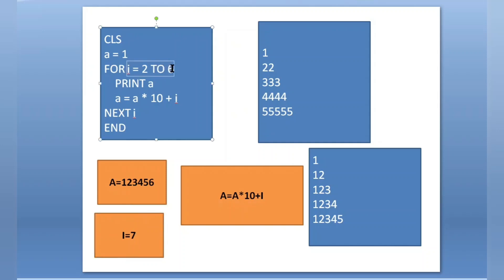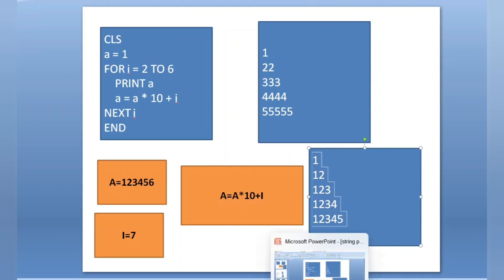Next i — the value of i is incremented by 1 to 7. It goes to the loop and checks: is i = 7 in the range 2 to 6? No — condition is false. When the condition is false, it jumps just after the NEXT i line, which is END, and our program ends. We got the result: 1, 12, 123, 1234, 12345 printed. This is how it works.